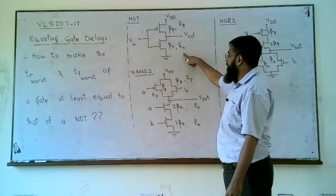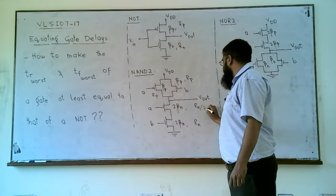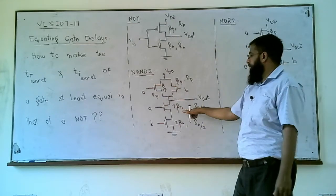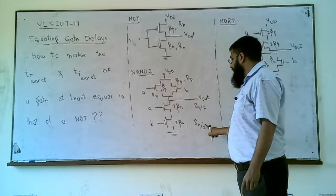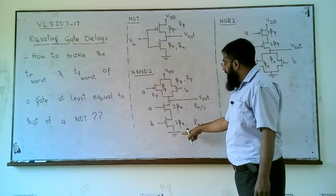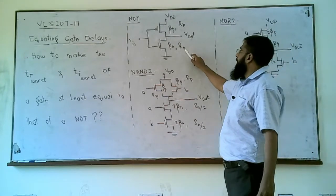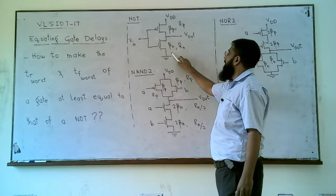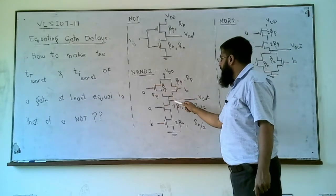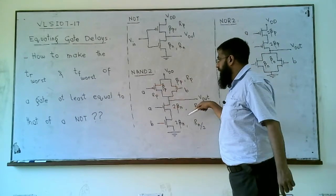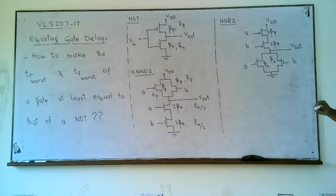To make the fall time delay equal to that of a NOT gate, we use 2×beta_n for each NMOS transistor. Since beta and r are inversely proportional, 2×beta_n reduces r_n to r_n/2 for each transistor. In series, r_n/2 plus r_n/2 equals r_n, which matches the r_n of the NOT gate. So the worst case fall time delay of NAND2 now equals that of a NOT gate.